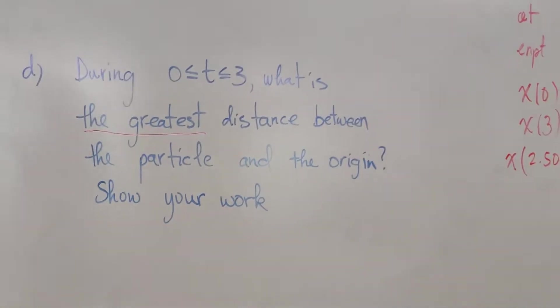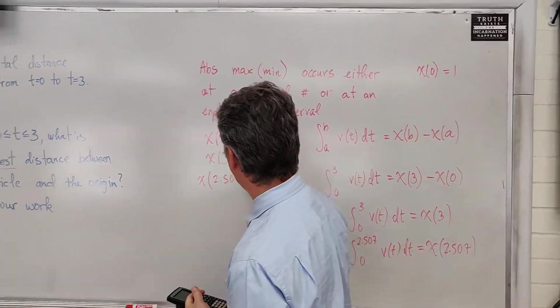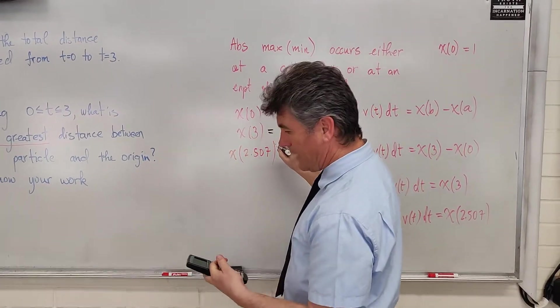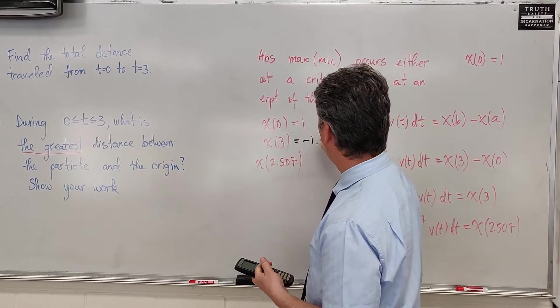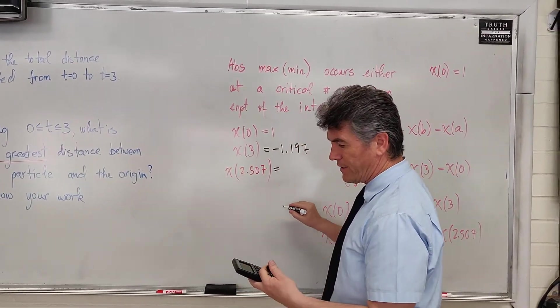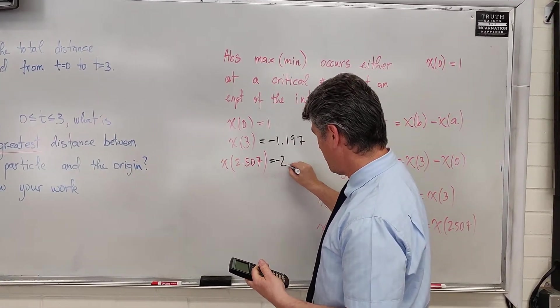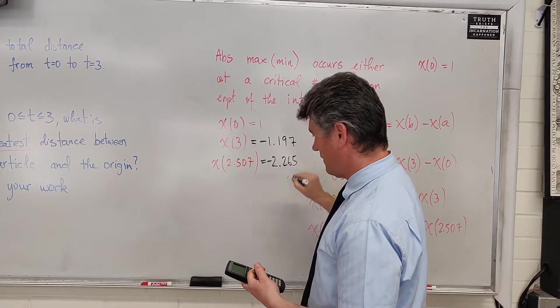So I'm going to take my calculator with me. We have x of 3 is equal to negative 1.197. And x of 2.507 is equal to negative 2.265.